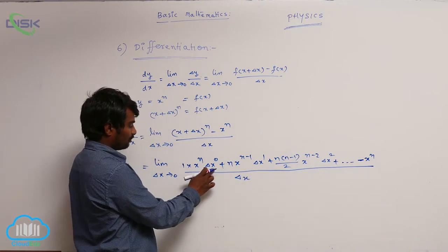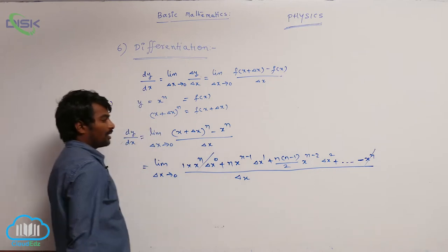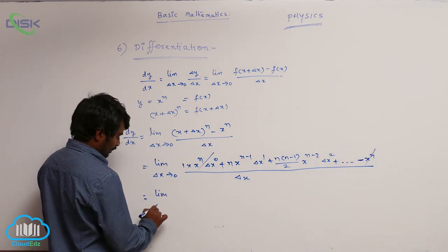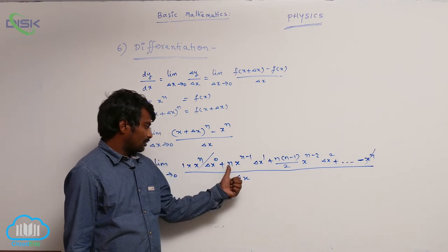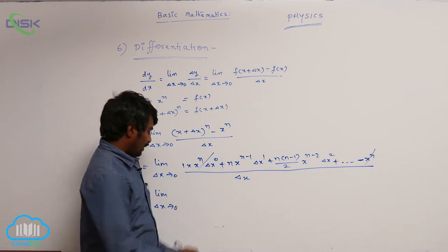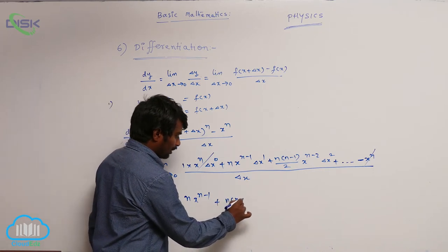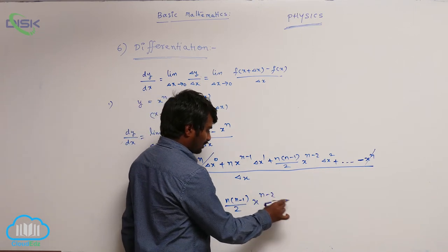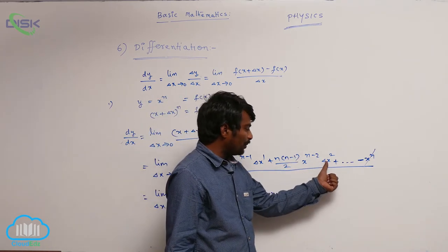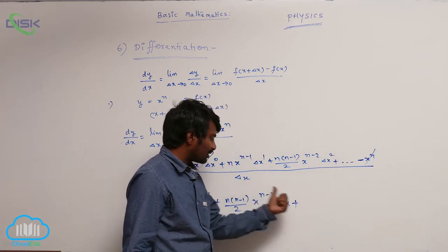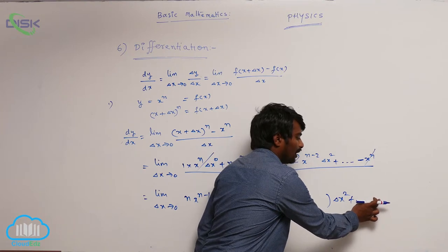Here delta x power 0 is 1, so 1 times x power n is x power n. This first term x power n and the minus x power n cancel each other. Now dividing through by delta x: n times x power n minus 1 times delta x by delta x is 1, plus n times n minus 1 by 2 times x power n minus 2 times delta x, plus the next term gives delta x squared, and so on for higher powers of delta x.